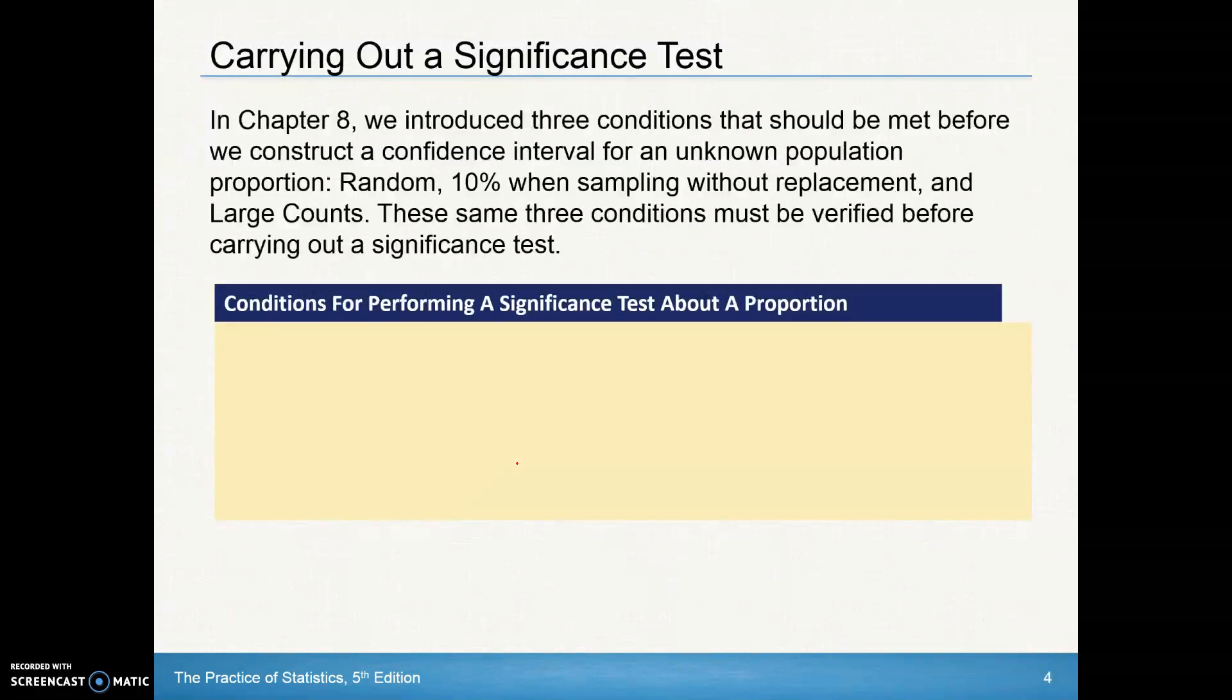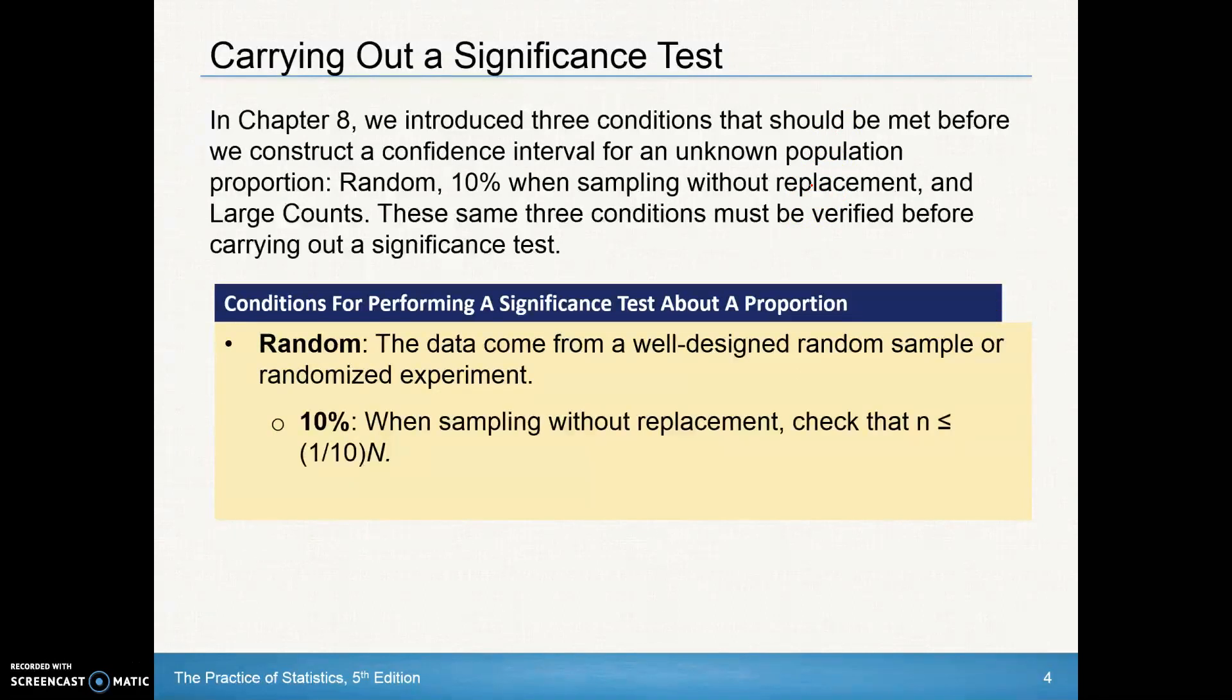So in chapter 8 you may recall those three conditions for inference. I reviewed those back in the first slide of what we're going to learn. The S, the I, the N, the SRS, the independence and normality, that we have to have those met before we construct a confidence interval. Those that are again the randomness, the 10 percent condition, and the large counts.